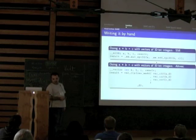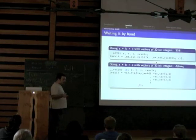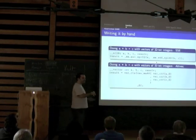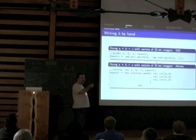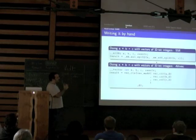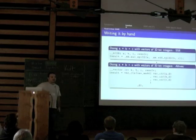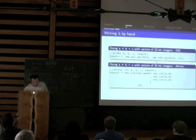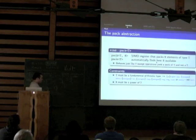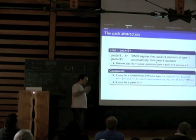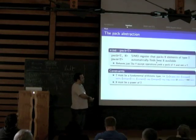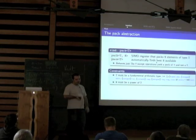An audience member points out that the multiplication function is only available in SSE4, so if your processor doesn't support SSE4 you have to implement integer multiplication by hand. You can imagine how tricky it is to write a correct integer multiplication algorithm from scratch. This illustrates the inconsistencies even within the same SIMD family.